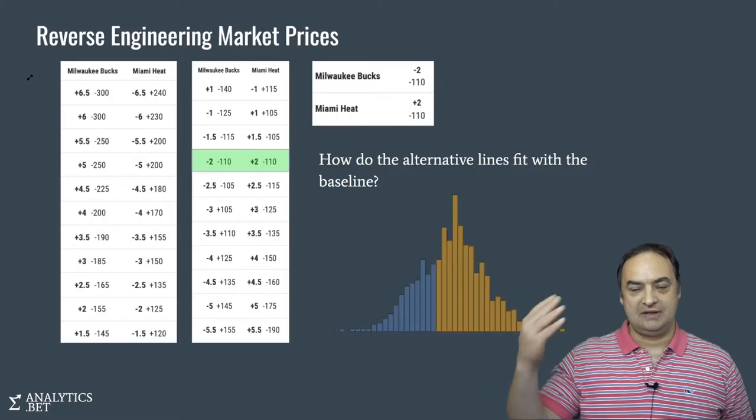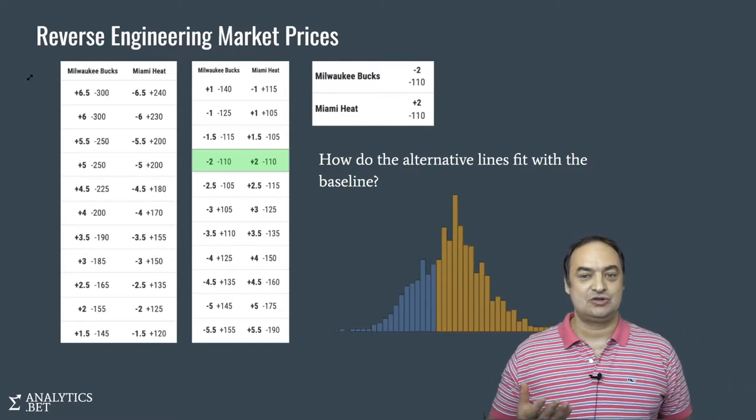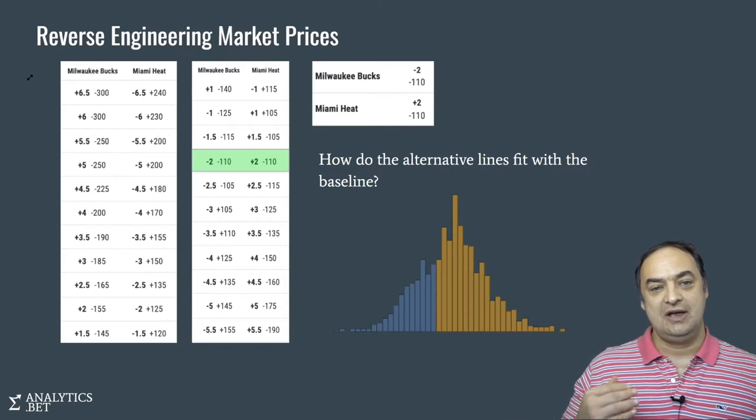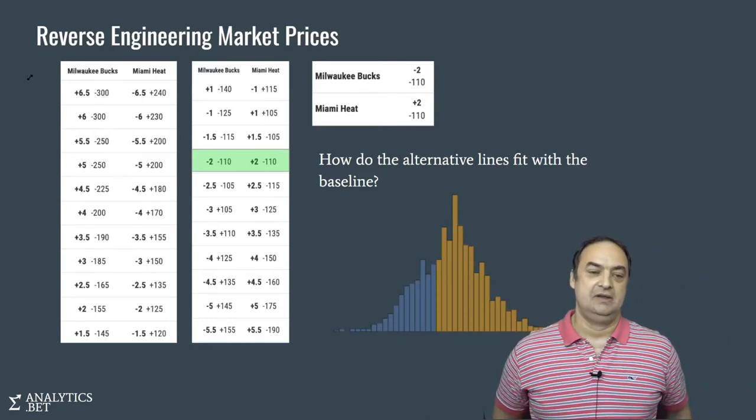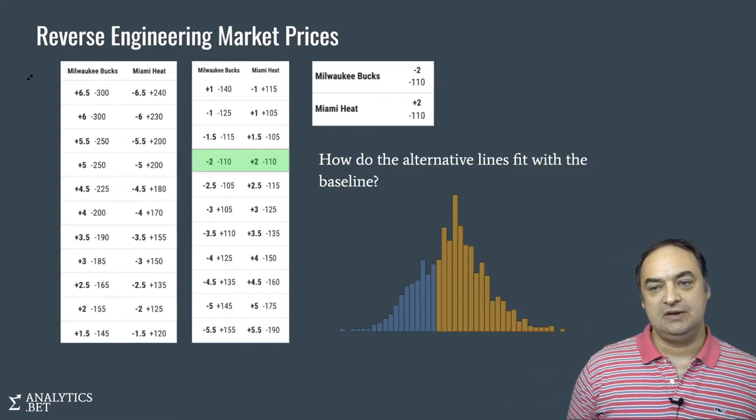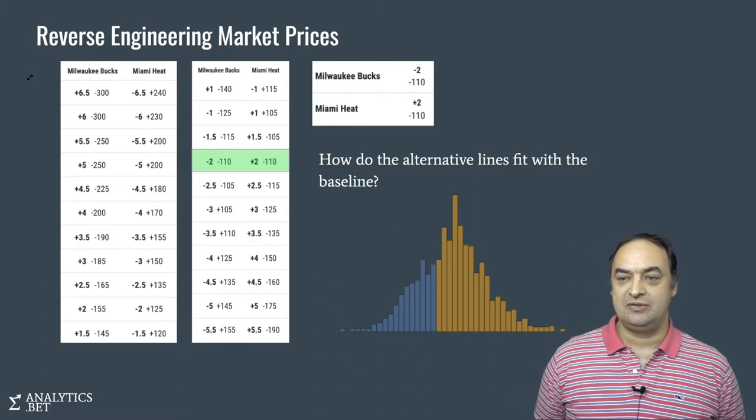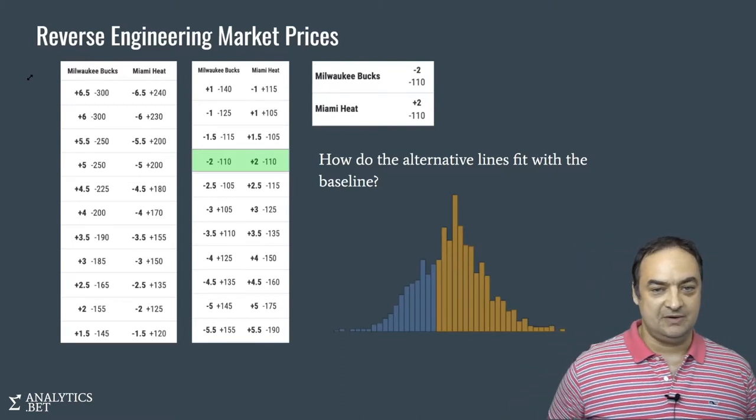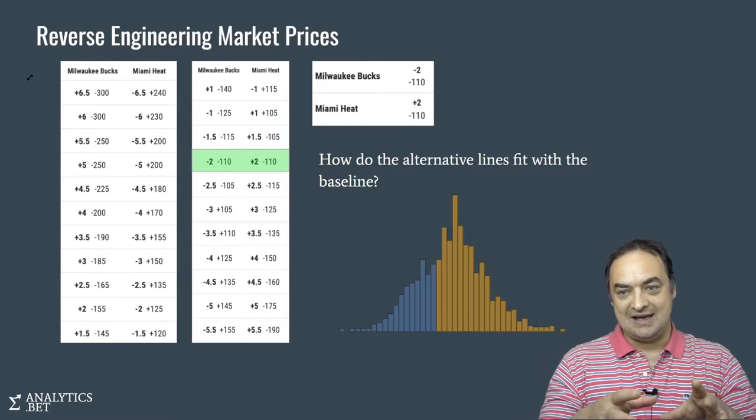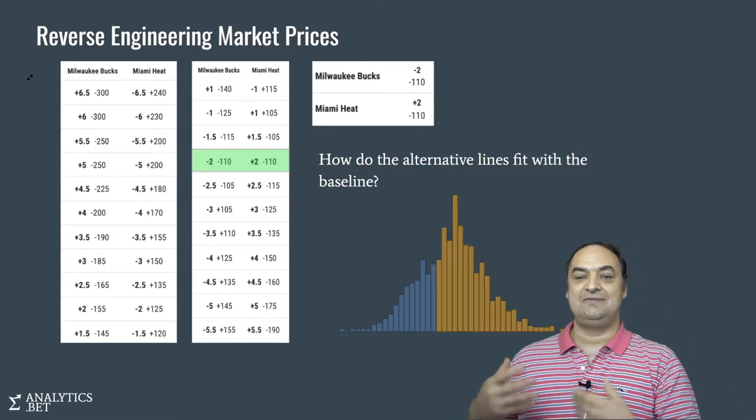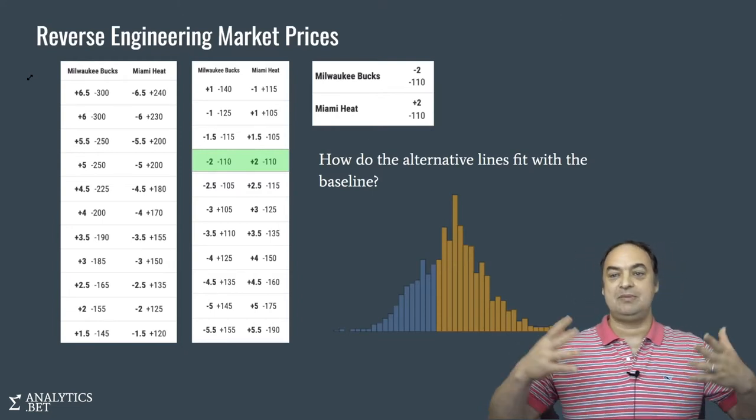The meta point we're making here is that it's a useful task to try to reverse engineer how the market seems to be pricing itself. This doesn't mean we are hacking the bookmakers or going through their garbage to figure out what they're doing. It's using the data that we have to try to figure out what is effectively being done, not necessarily by the books per se, but by the market as a whole.